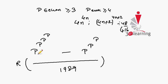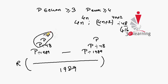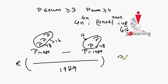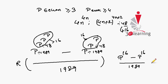We divide this number by 1989, and the cyclicity of 1989 is 48. So divide this power by 48 and divide this power by 48. Since p is even and greater than 4, this complete number is even with power greater than 4. So dividing by 48, the remainder is 16 for both terms. We replace the power with the remainder 16. Our equivalent expression becomes: p raised to power 16 minus p raised to power 16, divided by 1989. Again we get the same numbers, so the complete remainder is 0.